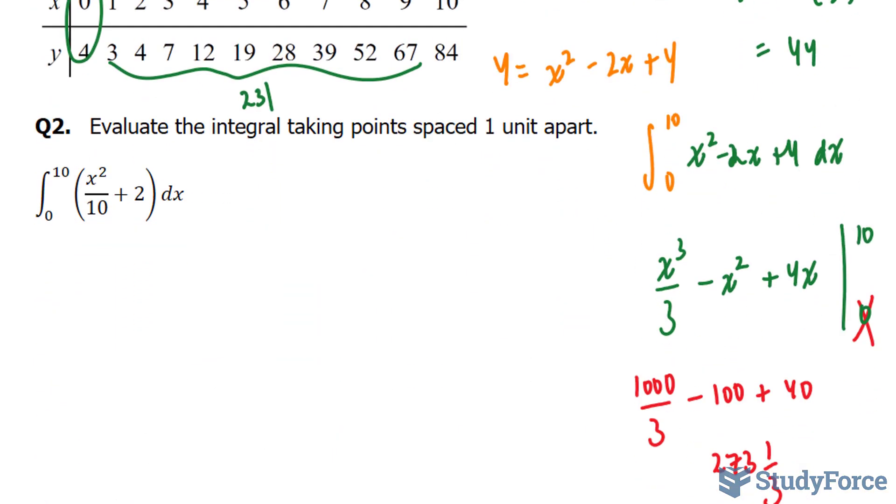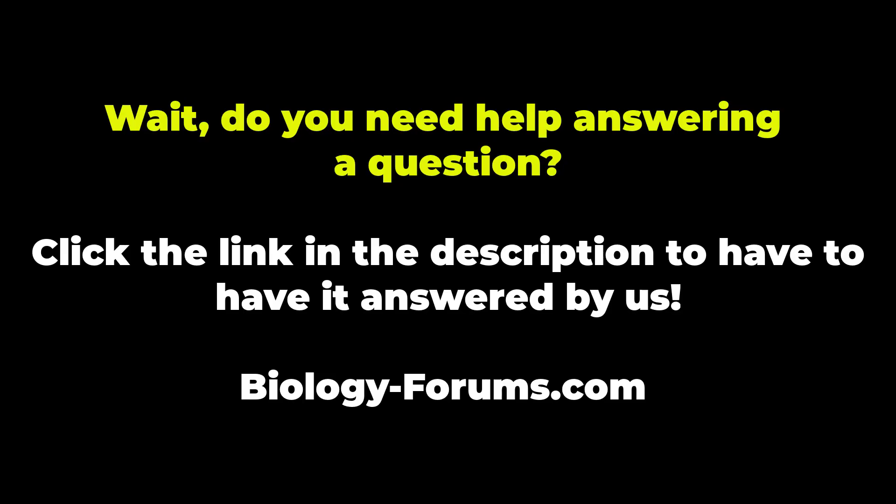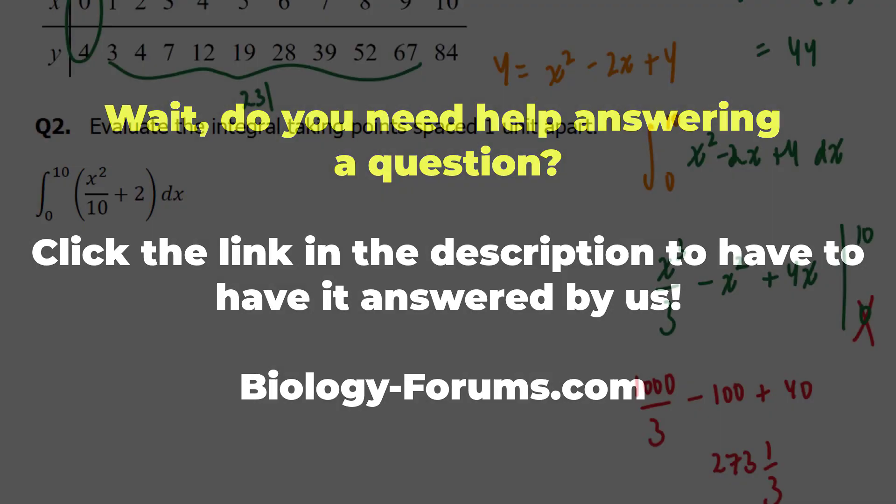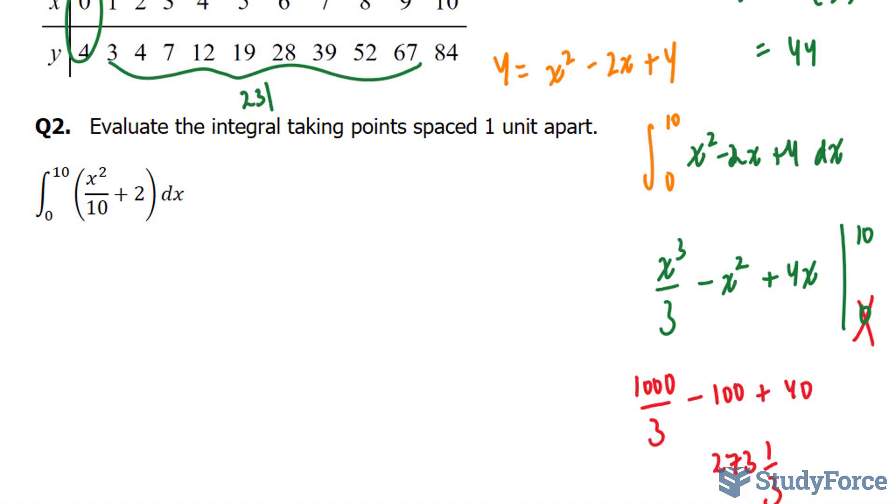Let's move on to question 2. This time they want us to evaluate the integral taking points spaced one unit apart. What we have to do is make a table of point pairs for the function. And if you do that, you should end up with something that looks like this. Where you have x, y ranging from 0 to 10. And outputs that look like this.